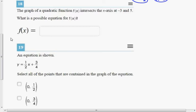So this requires you to work backwards. What they're telling you is it intersects the x-axis at negative 3 and 5. So in other words, it has x-intercepts at negative 3 and positive 5.